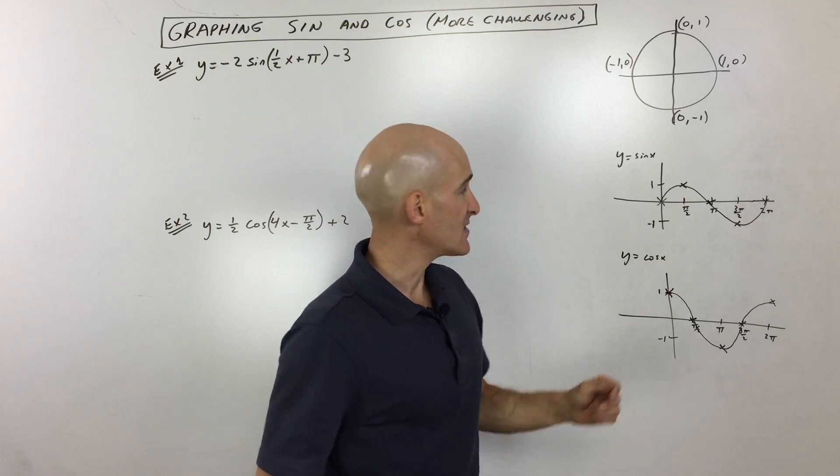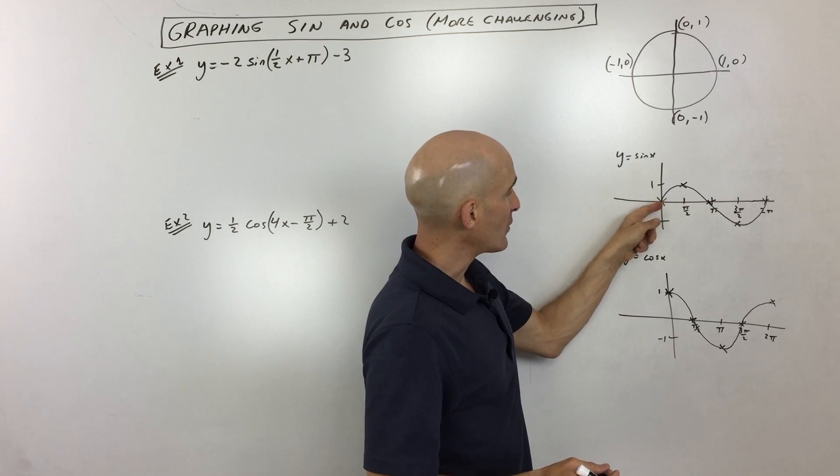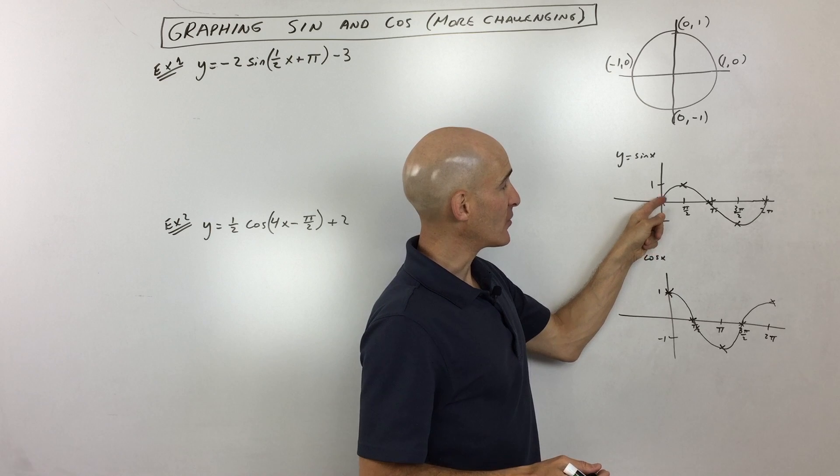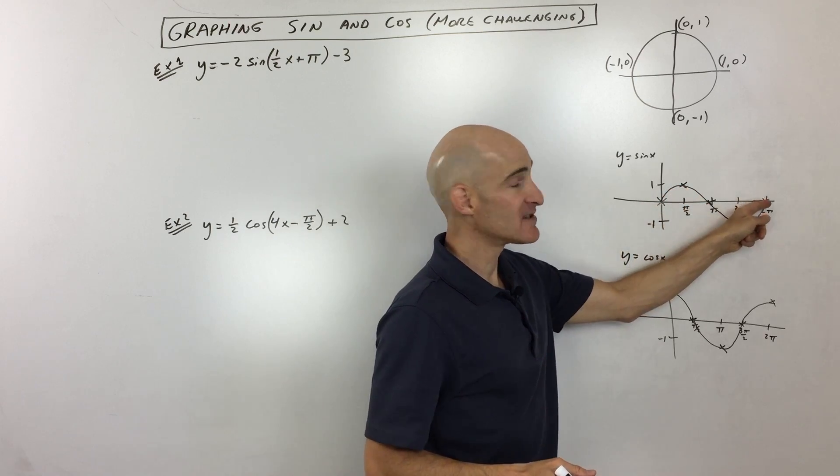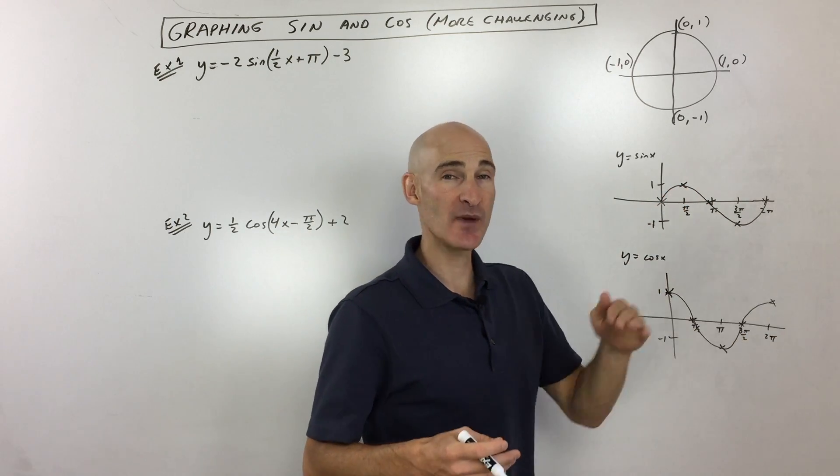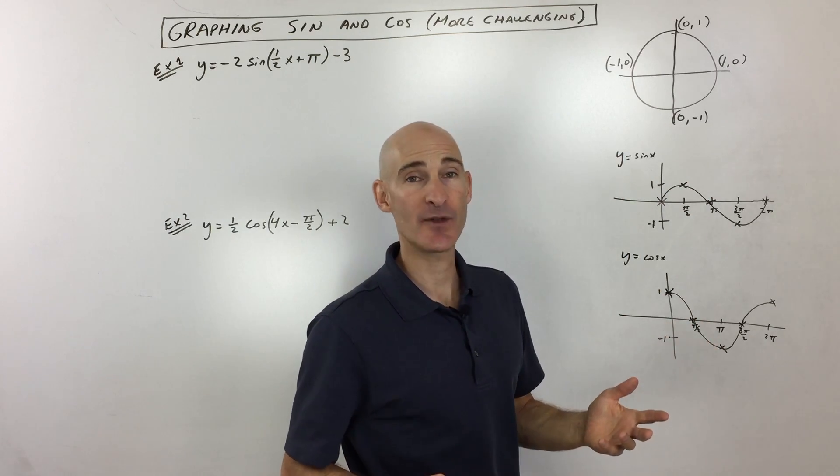A lot of students remember when they're graphing sine, they think it starts at zero, and then it goes to the max, zero, min, zero, max, zero, min, zero, max. So basically, the zeros are alternating with the maxes and the mins.